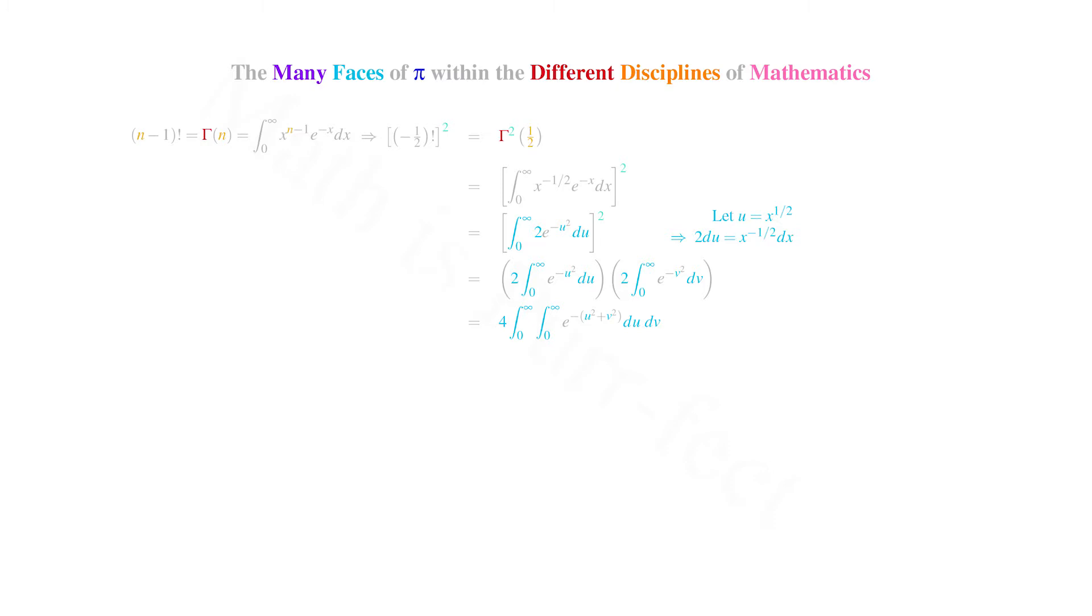This should look very similar to polar coordinates. Given u and v as our rectangular axes, we see that r squared for any radius r is equivalent to u squared plus v squared.